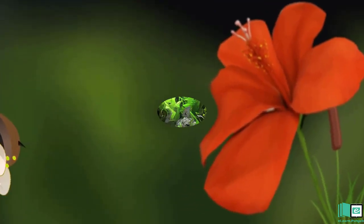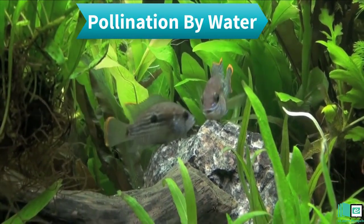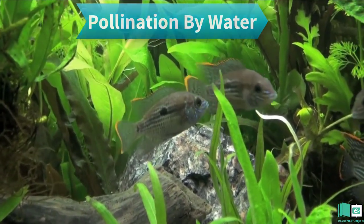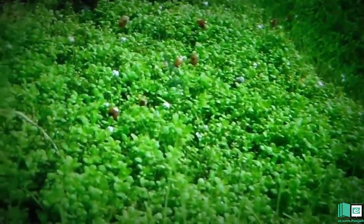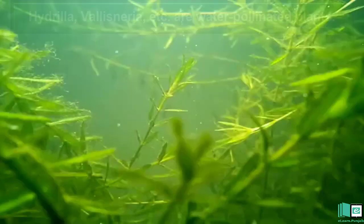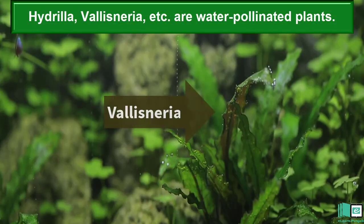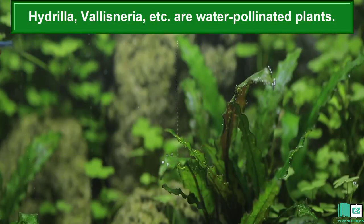Pollen grains have rough and sticky surfaces, due to which they stick to animals' bodies. Pollination by Water: Pollination by water is not common, but a few plants release their pollen grains into the water. The pollen grains move slowly along the water currents and reach other aquatic plants. Hydrilla, Vallisneria, etc. are water-pollinated plants.